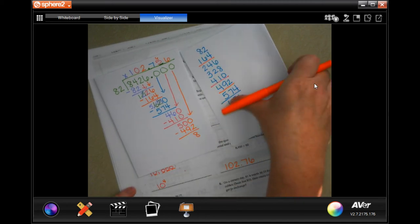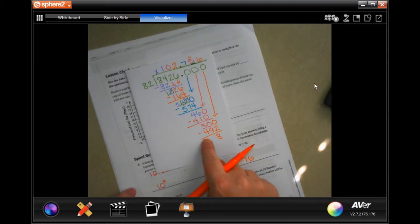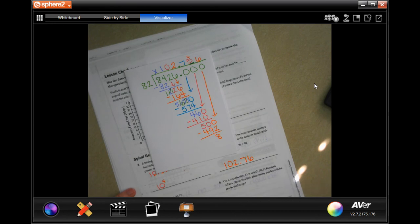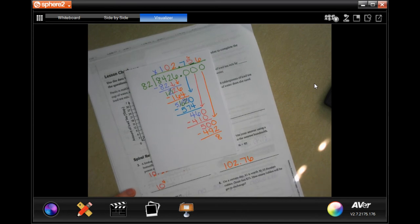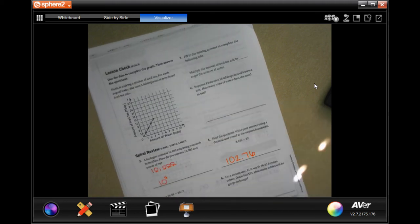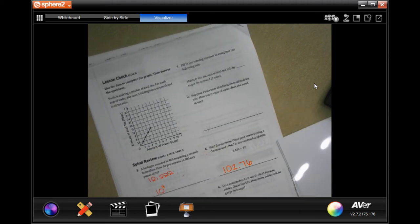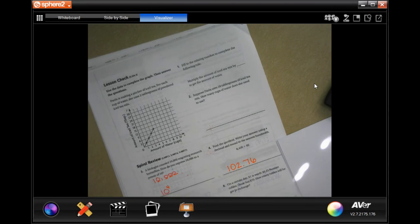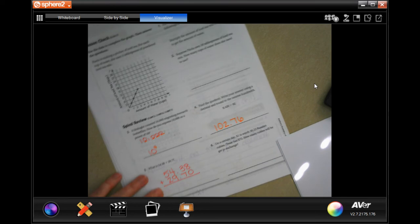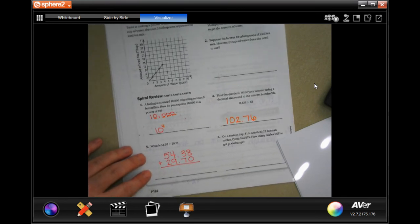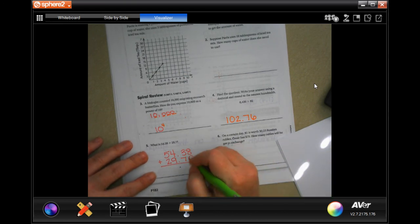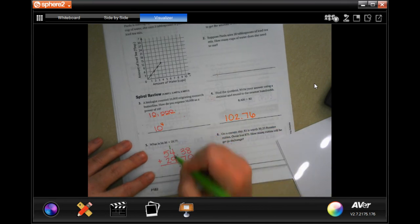What is fifty-four point thirty-eight plus twenty-nine point seven? I'm going to put a zero there. Drop my decimal. Eight plus zero is eight, three plus seven is ten, carry the one. One plus four is five, plus nine is fourteen. One plus five is six, plus two is eight. Eighty-four point zero eight.